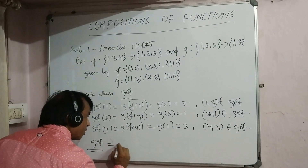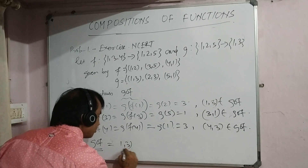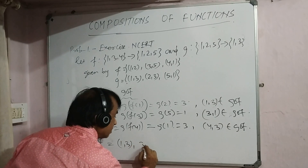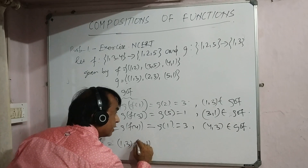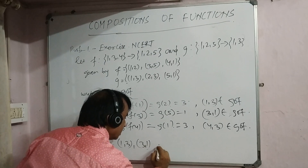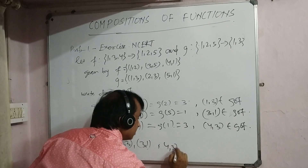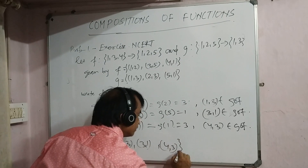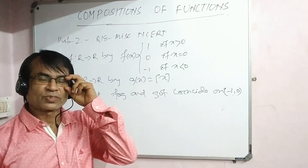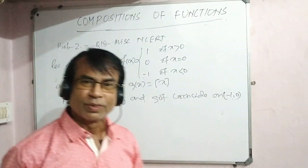Therefore gof = {(1,3), (3,1), (4,3)}. Coming to problem number 2.